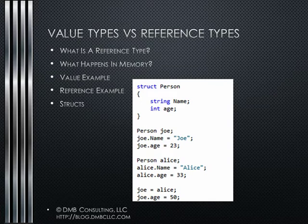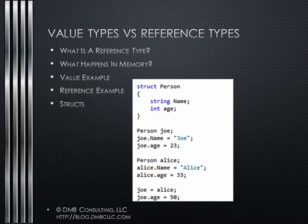But what happens if we make Person a struct? Struct Person with a name and an age: Person joe, joe.name = "joe", joe.age = 23; Person alice, alice.name = "alice", alice.age = 33. joe = alice — assigning alice to joe — then joe.age = 50. Now what is the value of alice.age? In this case, alice is still 33, because when we assigned alice to joe, joe got a copy of everything that alice had. So joe's name is "alice" and joe.age holds the value of 33 before we assign 50, but the assignment has no impact on the value of alice.age.